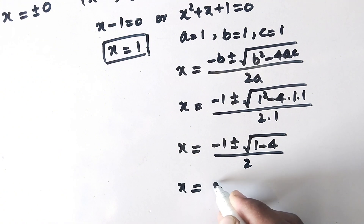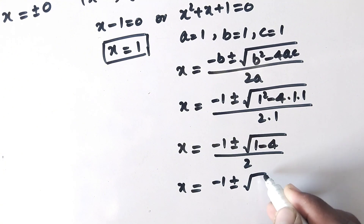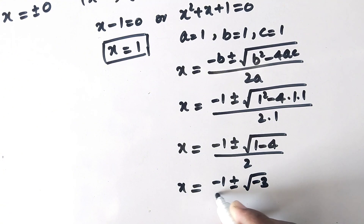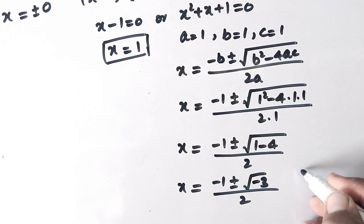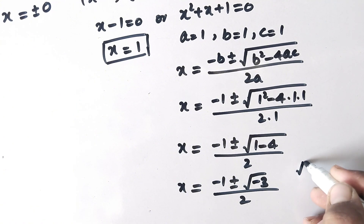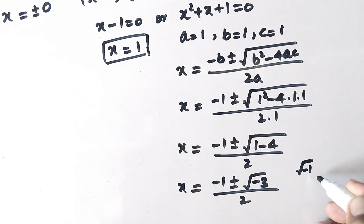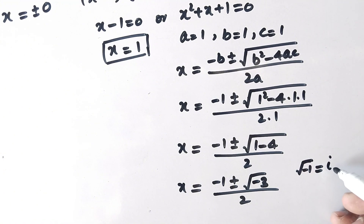Then x is equal to minus 1 plus or minus square root of negative 3 over 2. And as we know, the square root of negative 1 is equal to the imaginary number i.